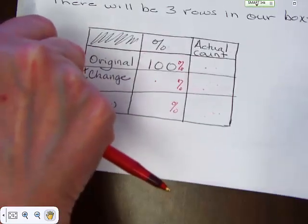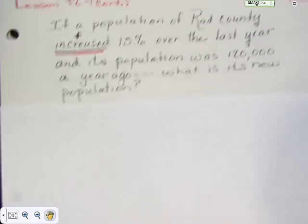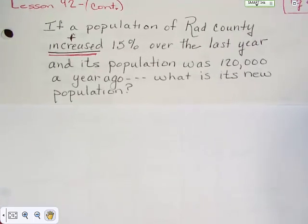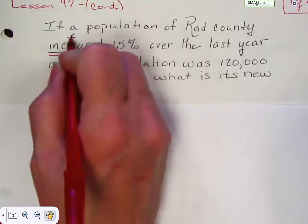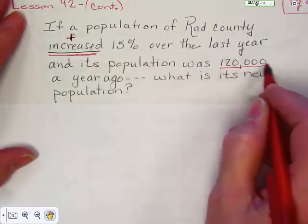Now taking a look at an example problem. And you know you've got to write these into your notes because they're specific. If a population of Rad County increased, notice I put a little plus above it, fifteen percent over the last year.